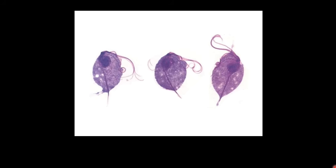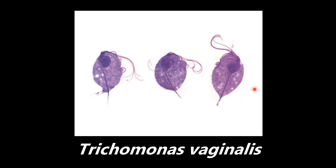This is an example of Trichomonas vaginalis — a pretty unique shape. Nothing else really looks like this, so it is easy to identify. It is the causative agent of trichomoniasis in females. Trichomoniasis is characterized by a foul-smelling green discharge from the vagina. The treatment is metronidazole (Flagyl), and importantly this treatment must be given to both the patient and the partner — otherwise they'll keep passing the infection back and forth.